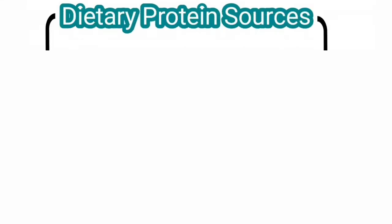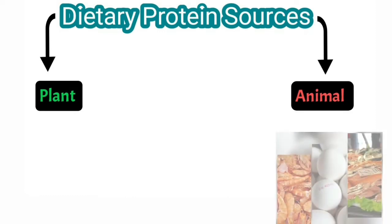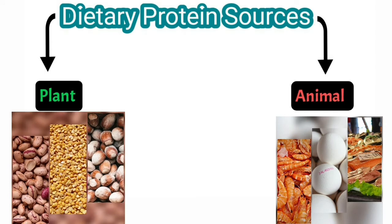Sources of dietary proteins. The proteins in the diet are mainly obtained from two sources: one is plant source and the second one is animal source. Principal animal sources are milk and dairy products, meat, fish, liver, and eggs. Principal vegetable sources are cereals, pulses, peas, beans, and nuts.